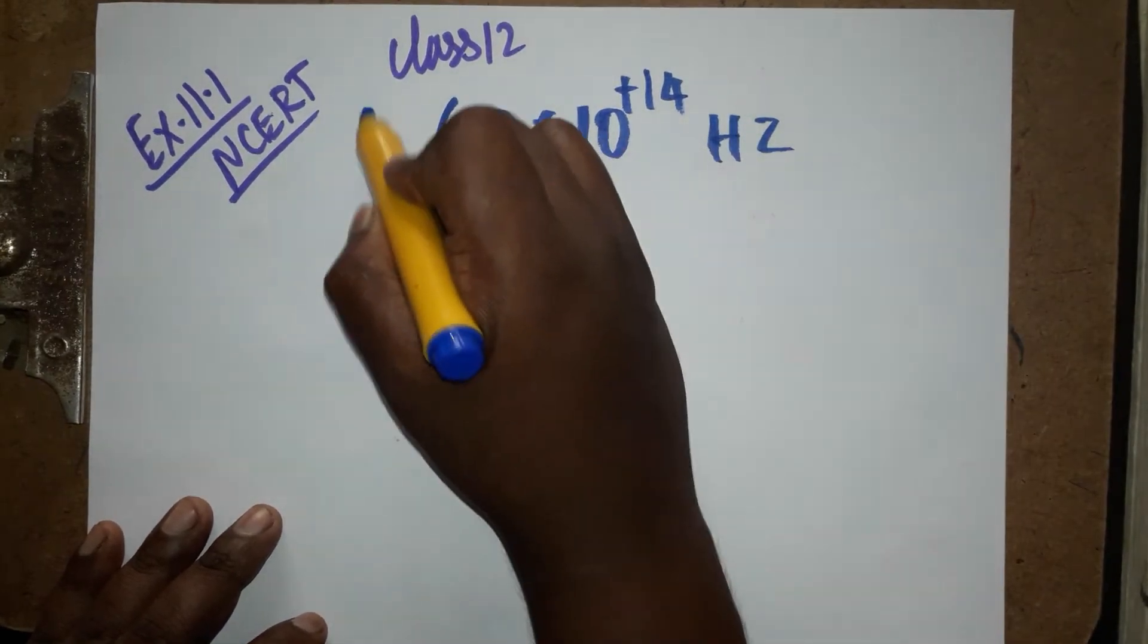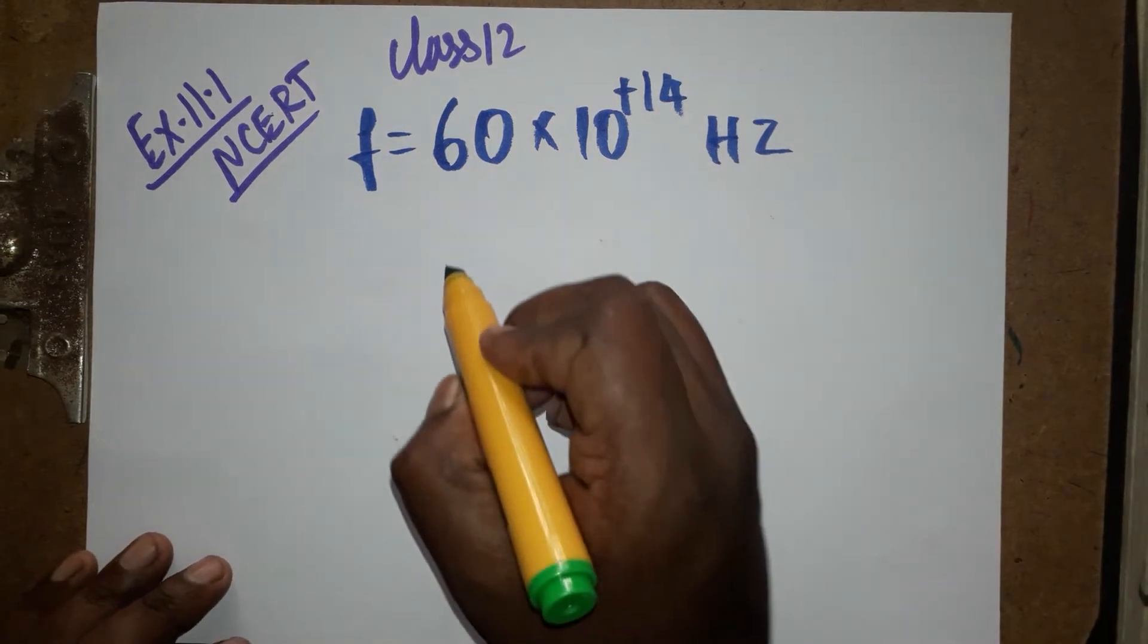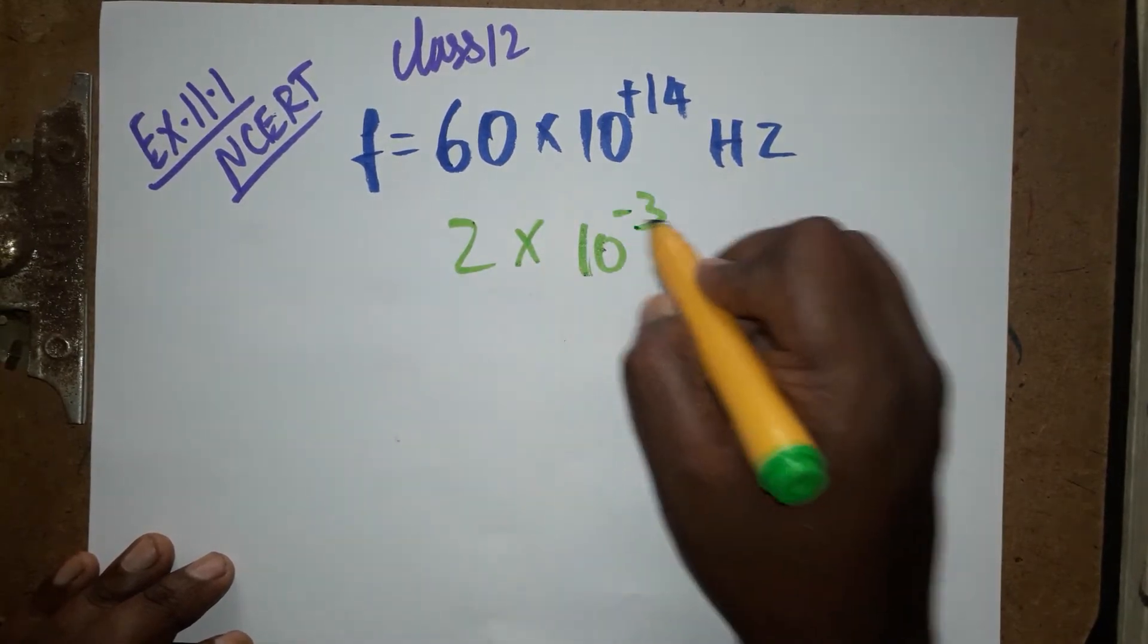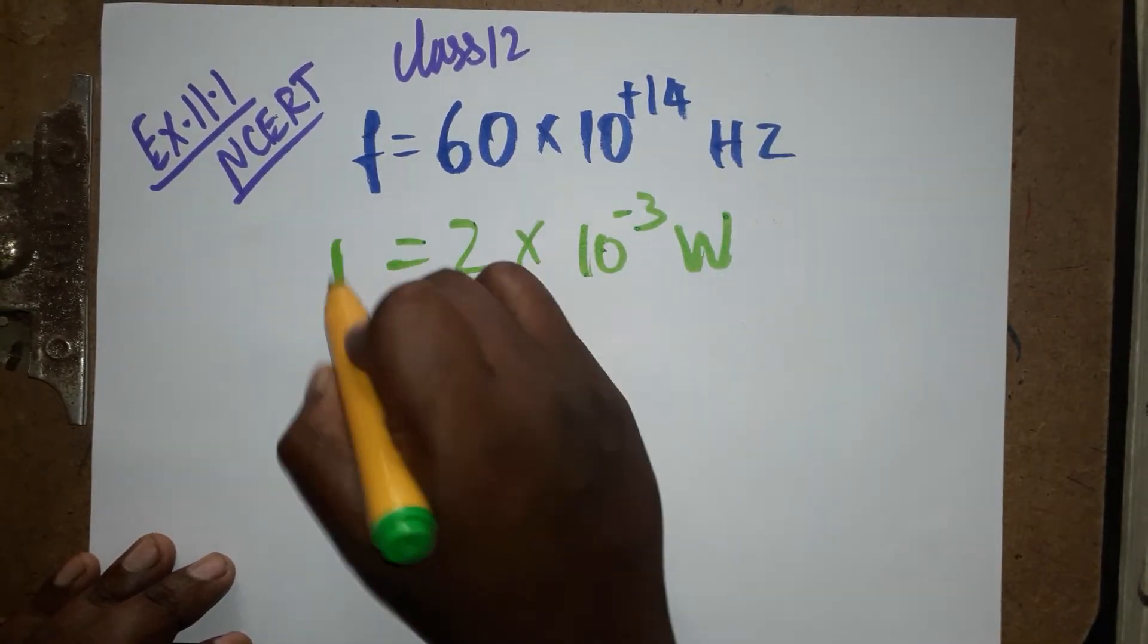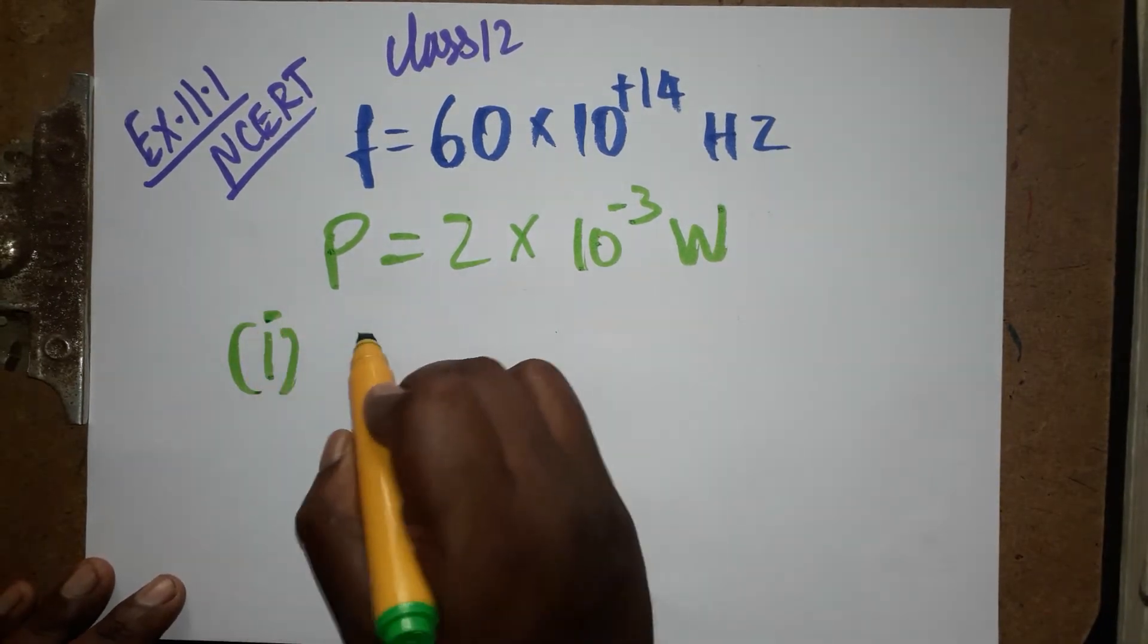Based on the unit we can know this is frequency, one by time period, or second inverse, also hertz. The next one, 2 into 10 power minus 3 watt is given, which is going to be the power.